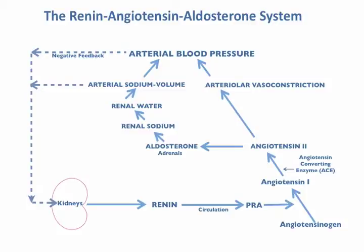These animations illustrate our view of how the renin-angiotensin-aldosterone system works to maintain blood pressure. First, we will discuss how the system maintains a normal level of blood pressure. Then we will illustrate how suppression of renin secretion works to slow the development of high blood pressure when patients retain excessive amounts of salt. Then we show how high blood pressure develops when the kidneys retain even greater amounts of salt at a time when renal renin secretion has been maximally suppressed.